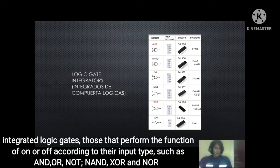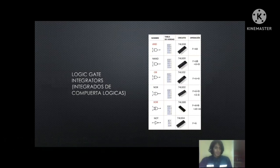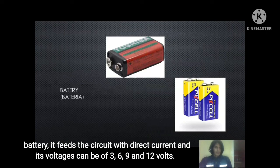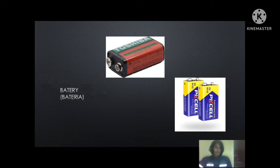Integrated logic gates perform functions according to their type, such as AND, OR, NOT, NAND, NOR, and XNOR. Battery: supplies the circuit with direct current at voltages of 3, 6, 9, and 12 volts. Thanks for your attention.